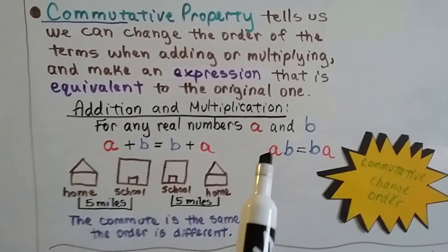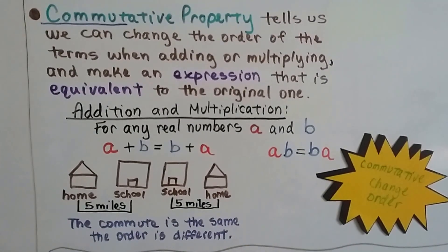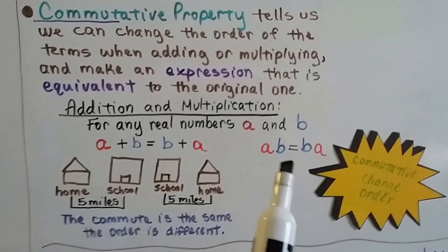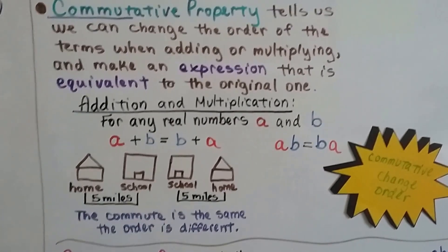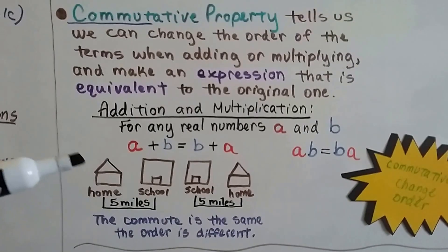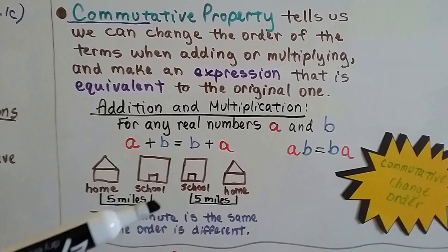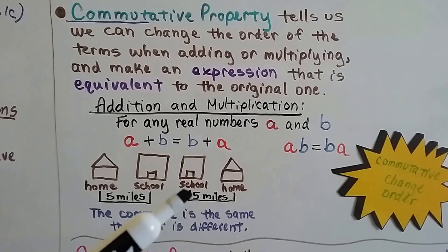And for multiplication, a was in front, now it's in back. But it's still going to equal each other. It's an equivalent expression. We just change the order in commutative. So this is why I wanted you to think of commuting for commutative. When you're at home and you go five miles to go to school, at the end of the day at school,